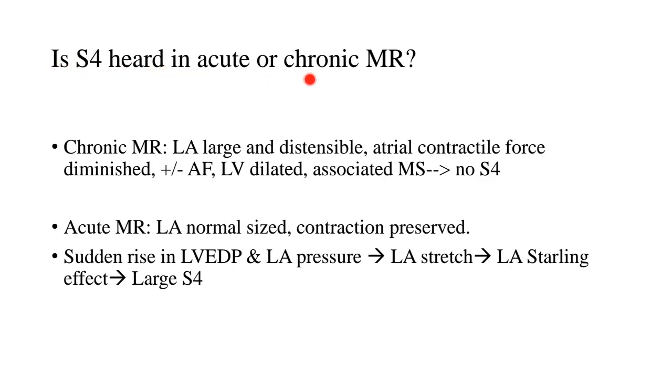Is S4 heard in acute or chronic MR? Now, we know that S4 is heard in acute regurgitant lesions but the difference between acute and chronic MR are explained here. Now, what happens in chronic mitral regurgitation is that the left atrium is large and distensible but the atrial contractile force is diminished and the patient may or may not have atrial fibrillation. Additionally, the LV may be dilated if the MR is chronic for a very long time and if it starts becoming decompensated then the LV also starts dilating. Also, if it's a rheumatic cause of MR, there may also be associated mitral stenosis. So, all these reasons are responsible for no evidence of S4 in chronic MR.